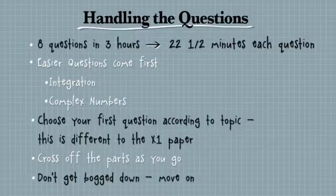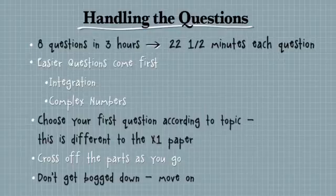That's actually a different strategy to the Extension 1 paper. In the Extension 1 paper, start at the beginning, work all the way through quite steadily, because it gradually increases in order of difficulty. But the Extension 2 tends to do a little bit of a jump. Okay, easy to hard, easy to hard, easy to hard, and then harder and harder and harder. So the beginning questions are actually going to be a little easier to begin with.